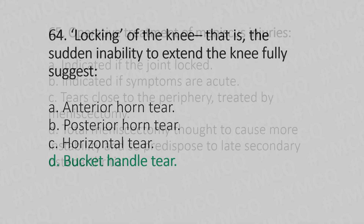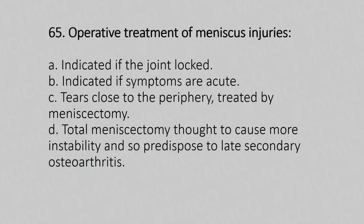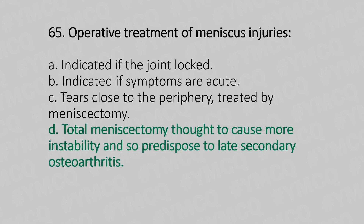Now let's move to quiz number 65. Operative treatment of meniscus injury: Option A, Indicated if the joint is locked; Option B, Indicated if the symptoms are acute; Option C, Tear close to periphery treated by meniscectomy; Option D, Total meniscectomy thought to cause more instability and predispose to late secondary osteoarthritis. And the answer is Option D, Total meniscectomy thought to cause more instability and predispose to late secondary osteoarthritis.